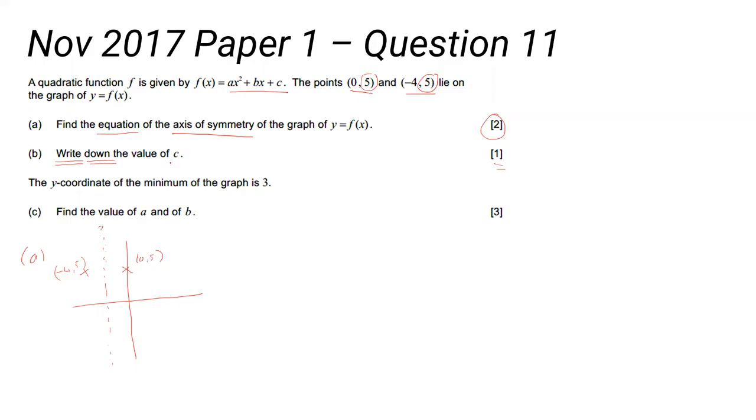That's this point here. The c on a quadratic is the same as the y equals mx plus c in a straight line. It's the y-intercept. Why is it the y-intercept?